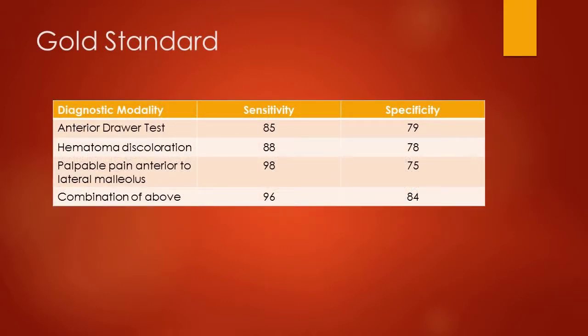The gold standard for ankle sprains is arthrography or a surgical procedure, though obviously that's not done very often with ankle sprains. A systematic review found that a combination of the anterior drawer test, looking for hematoma discoloration, and palpable pain anterior to the lateral malleolus gives you the best sensitivity in determining ankle sprains. However, the systematic review was not performed by athletic trainers but by other medical professionals.